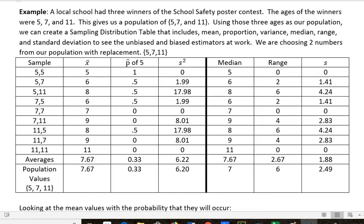We are choosing two numbers, or n = 2, from our population with replacement. So here are the different samples I could get. I could pick 5, replace it, and then pick 5 again — so one sample could be 5, 5. I could choose 5 and then 7, or 5 and then 11, and so forth until I get all 9 possible samples. That's the distribution table I'm making.